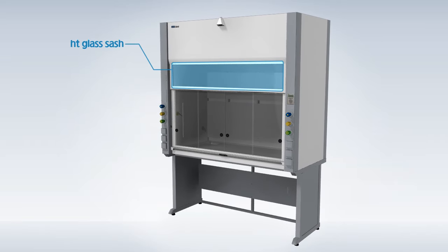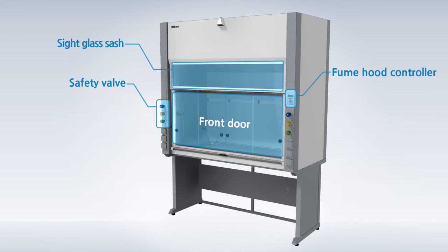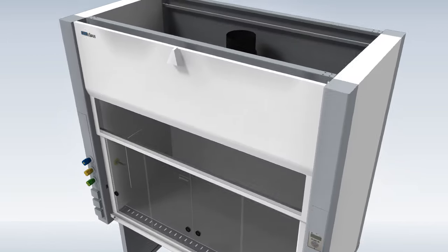The fume hood consists of a large sight glass sash, a front door, controller, safety valves, receptacles, automatic sash controller and a chamber type duct.